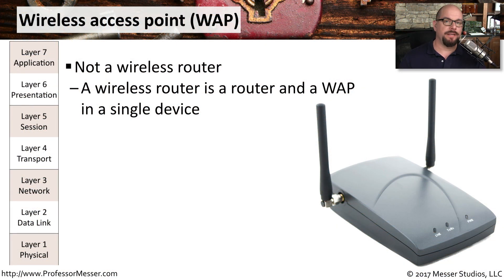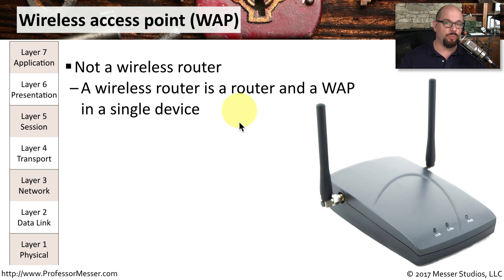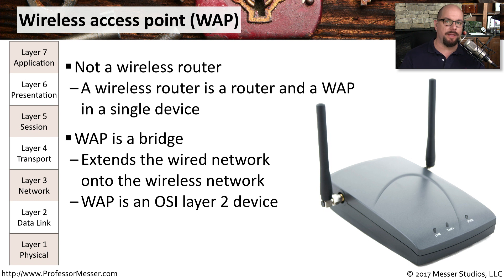In this video, we're going to talk about wireless access points, or WAPs. This is not the wireless router that you might have at home. A wireless router actually has a router inside of it, a switch, and a wireless access point. In this video, we're just going to talk about the wireless side of things. A wireless access point is a bridge — a switch configuration that takes traffic from the wireless network and switches it onto the Ethernet network. We can think of a wireless access point as a layer 2 device on the network.